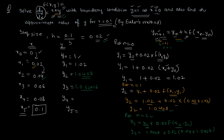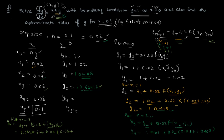For y₄, put n=3: y₄ = y₃ + h·f(x₃, y₃) = 1.062416 + 0.02·(x₃ + y₃) = 1.062416 + 0.02·(0.06 + 1.062416). Solving this gives y₄ = 1.08486. You can round to four decimal places to ease calculation.